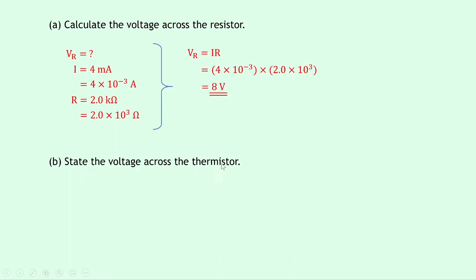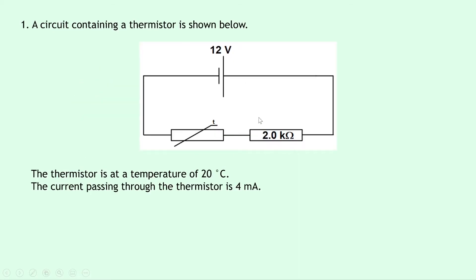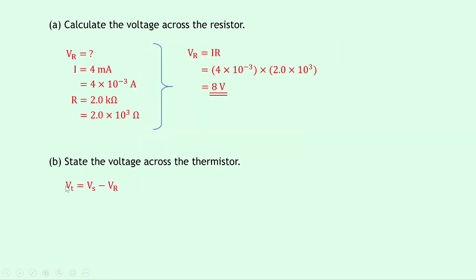Part B says to state the voltage across the thermistor. The word 'state' means we don't need much work here. Looking back at the circuit, the supply voltage is 12 volts and we've calculated the voltage across the resistor to be 8 volts. In a series circuit, the voltages across the components add up to the supply voltage. So the voltage across the thermistor equals 12 minus 8, which is 4 volts.